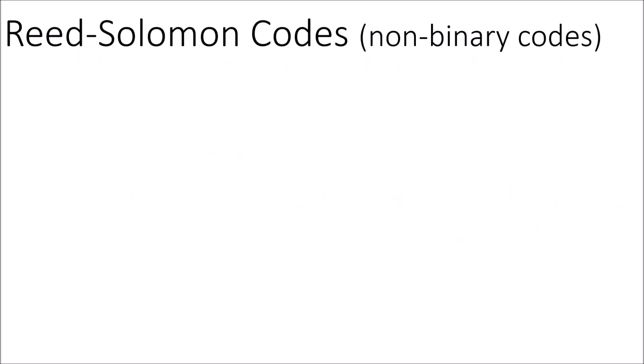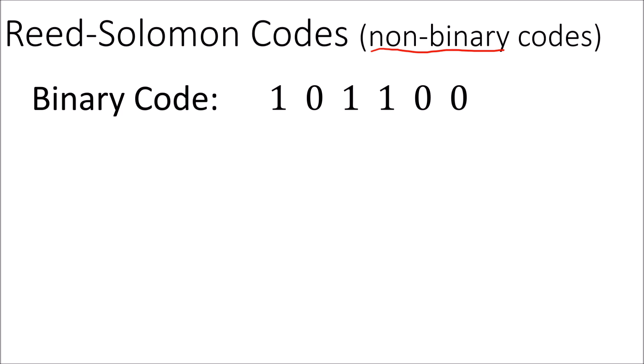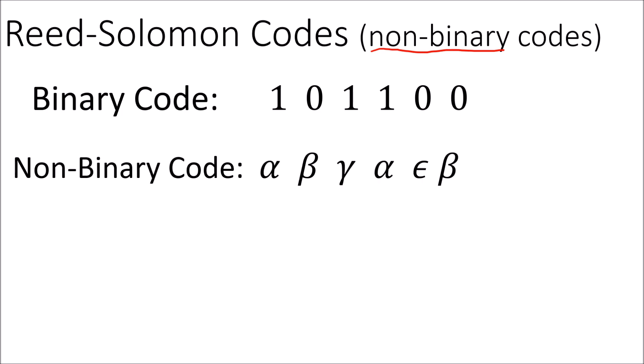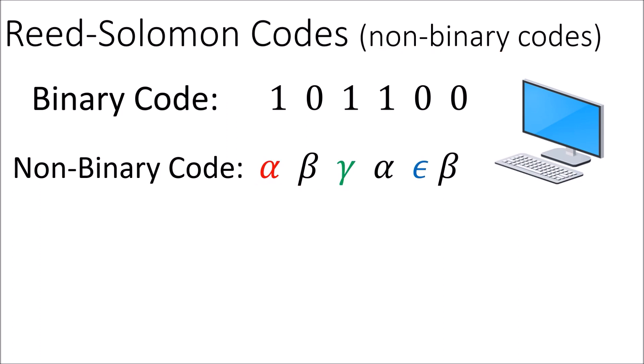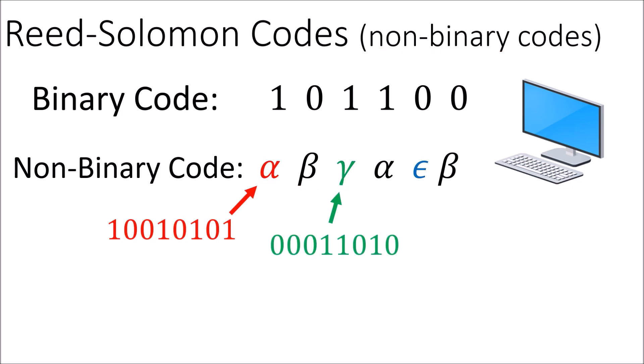The first thing to know about Reed-Solomon codes is that they include non-binary codes. Up until this point, we've only been looking at binary codes, where the codewords are made up of zeros and ones. In non-binary codes, the codewords are made up of symbols, which I've written here using Greek letters such as alpha, beta, and gamma. In real life, all codewords need to be processed by a computer of some kind, and computers only deal with zeros and ones. So actually, these symbols in non-binary codes are zeros and ones grouped together.